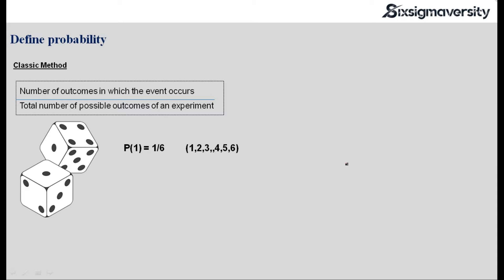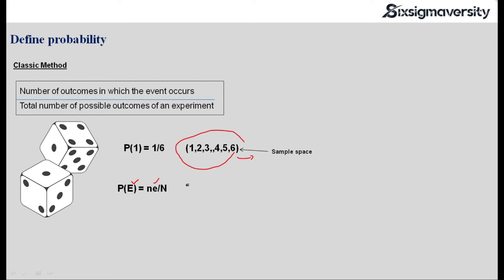These are different possibilities of an outcome that I can expect, and the possibility of getting one is one out of six. Now one, two, through six — this is known as the sample space. This can also be represented in a quick formula: P(E), which is the probability of that specific event I'm interested in, is equal to nE — the number of outcomes — divided by the total number of possible outcomes of an experiment, which is N.